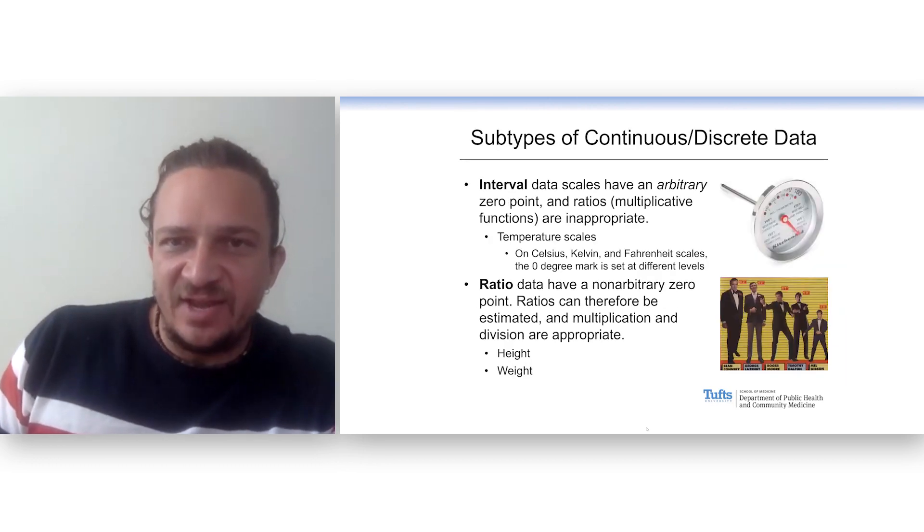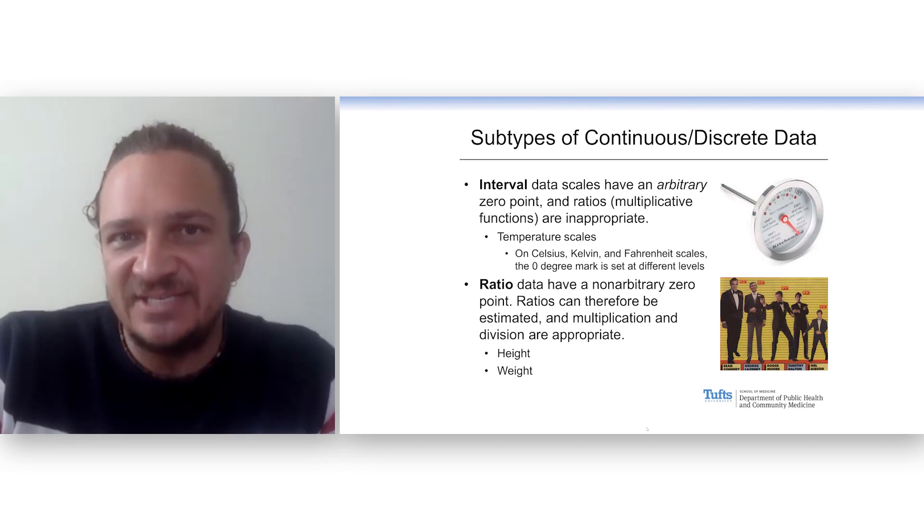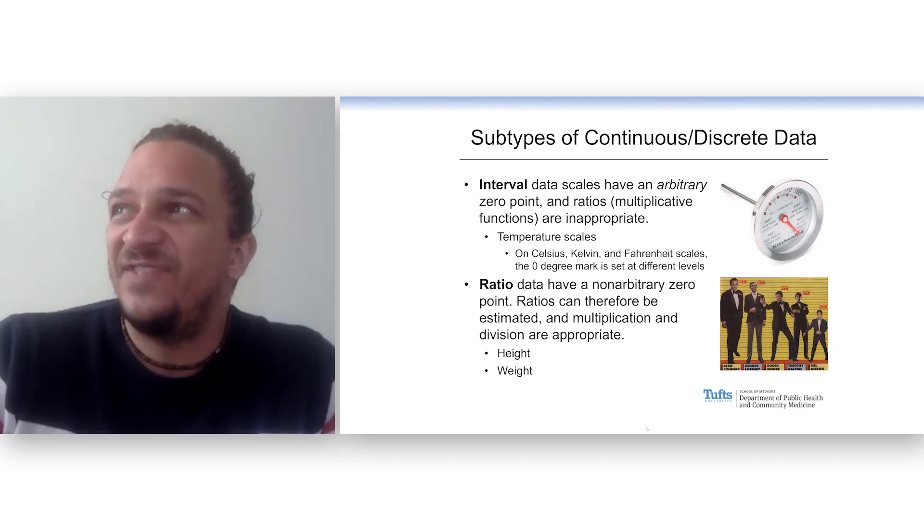Now, there's also a type of continuous data. There's a little subtlety between interval data and ratio data. So interval data is where the scale is not set on zero. So if you think about temperature, for example, if today it's 80 degrees, that doesn't mean it's twice as hot as 40 degrees because if you're in a different country, you might go by a different scale.